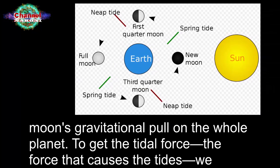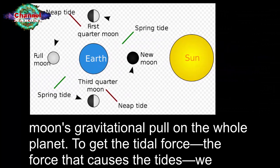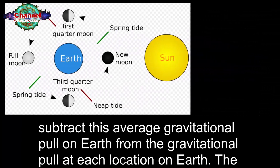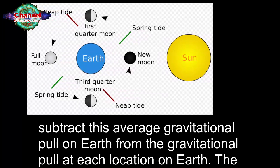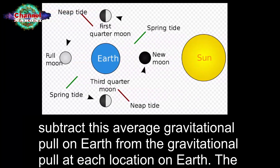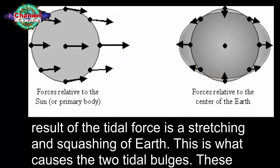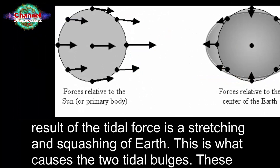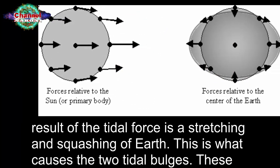To get the tidal force, the force that causes the tides, we subtract this average gravitational pull on earth from the gravitational pull at each location on earth. The result of the tidal force is a stretching and squashing of earth. This is what causes the two tidal bulges.